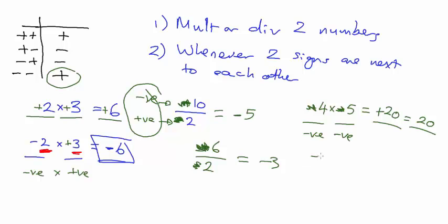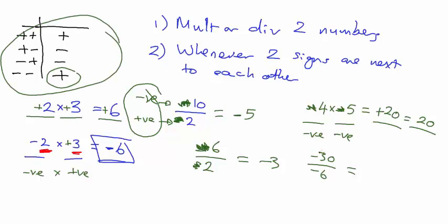Minus thirty divided by minus six: we're multiplying and dividing two numbers so the table works. Minus divided by minus - two negatives give you a plus. Ignore the signs: thirty divided by six is five. So the answer is just five.